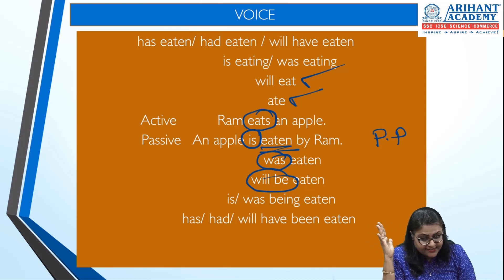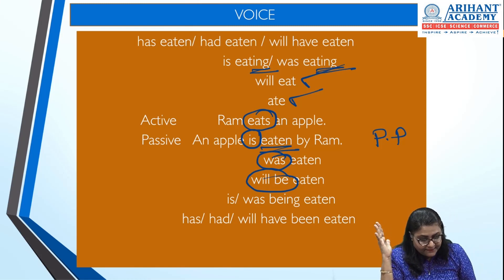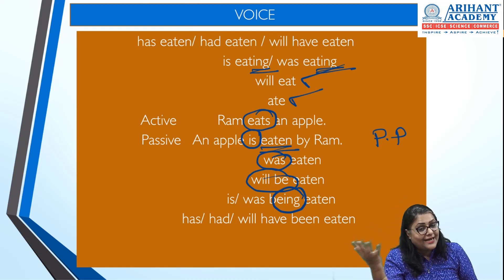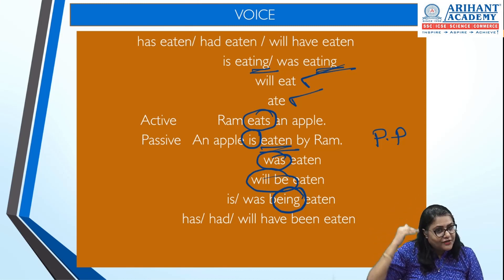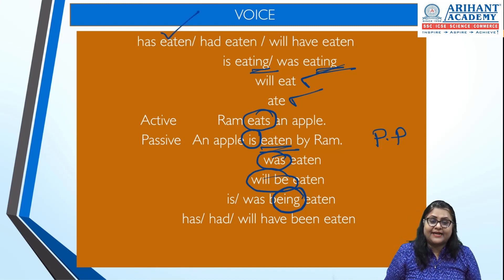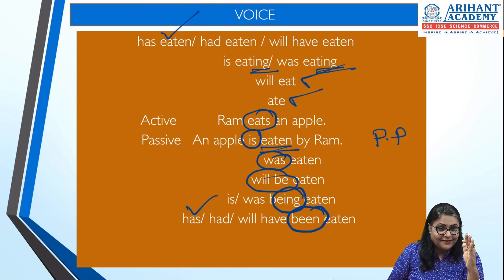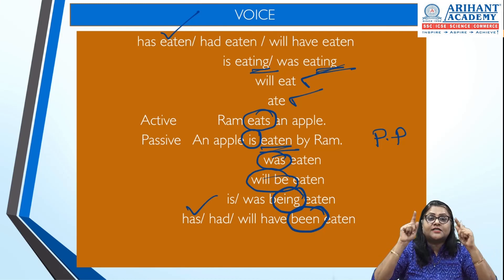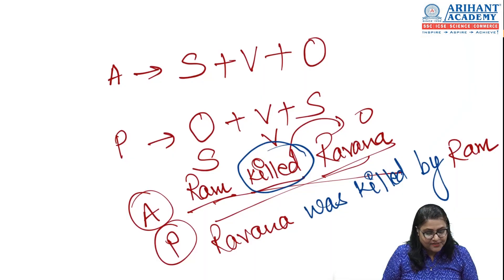For continuous tenses in passive, use 'being': 'Ram is eating an apple' → 'An apple is being eaten by Ram.' For perfect tenses, add 'been': 'Ram has eaten an apple' → 'An apple has been eaten by Ram.' 'Ram had eaten' → 'had been eaten.' The balance of tense must be maintained in both active and passive.